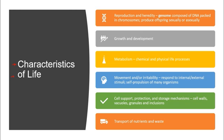Now, if we think about the characteristics of life: reproduction — a genome composed of DNA packed into chromosomes that produces offspring sexually or asexually — is one prime characteristic. So too is growth and development, metabolism (the chemical and physical life processes inside the cell), and motility — a cell moving from one location to another to find food, occupy a new niche, or for survival. Motility depends on signaling that can come internally or externally. Cell support, protection, and storage mechanisms like cell walls, vacuoles, granules, and inclusions are also characteristics of life.